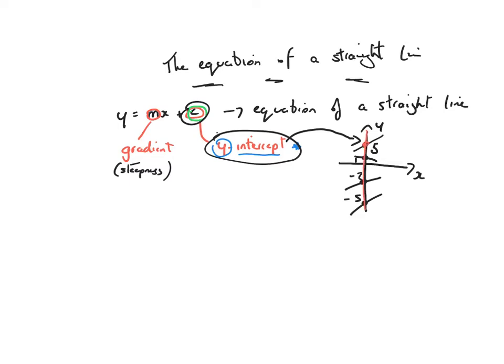So if you cut the y-axis at 5, the y-intercept is 5, c equals 5. If you cut it at 1, the y-intercept is 1, c is equal to 1. If you cut the y-axis at minus 2, c is equal to minus 2. If you cut the y-axis at minus 5, c is equal to minus 5. The important thing here is to remember that the equation of a straight line is y equals mx plus c — m is the gradient and c is the y-intercept, where you cut the y-axis.